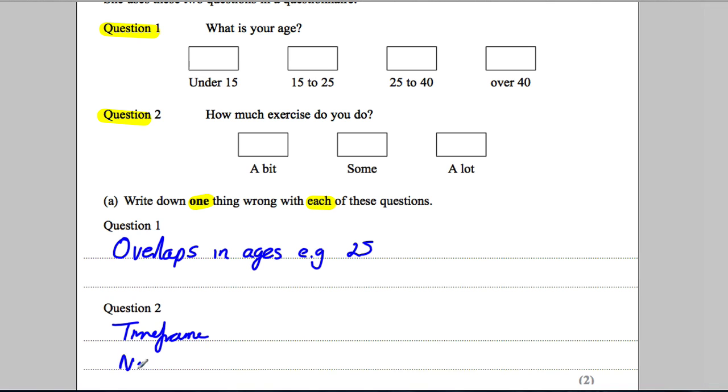The next is there's no option for no exercise. What if you didn't do any exercise? You would have nothing to tick and also it's very vague, isn't it? The options are extremely vague, they're not precise and so therefore it is a problem with that question.